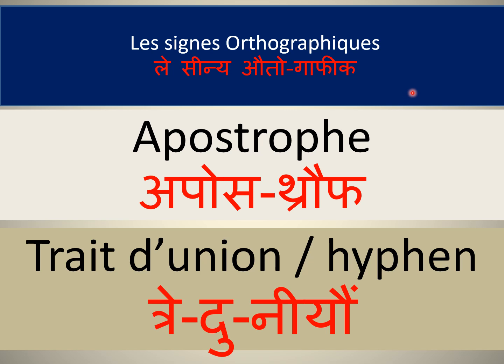We have already seen there are five accents, and now two more we are going to cover in this topic. One is the apostrophe, and the other is the trait d'union — which means the hyphen. In this topic of accents we are going to cover these two as well, because in French they help a lot in how words are pronounced and how words are contracted or compressed.